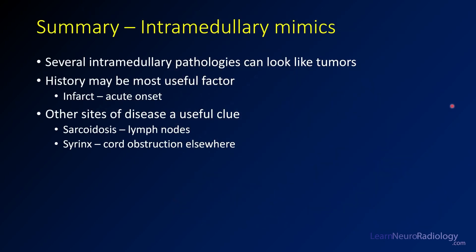To summarize: when you see abnormalities within the spinal cord, several pathologies can mimic tumors. History is a really useful factor — for instance, infarct typically has an acute onset. Disease at other sites can also be a useful clue: with sarcoidosis, you'll often have lymph node abnormalities in the chest, so consider a chest CT or X-ray. In the syrinx case, we saw cord obstruction elsewhere producing a mid-thoracic pre-syrinx. Be sure to include these mimics in your differential diagnosis.